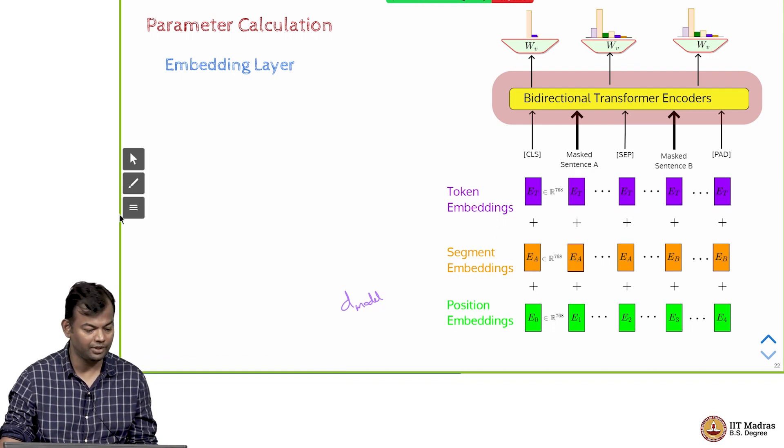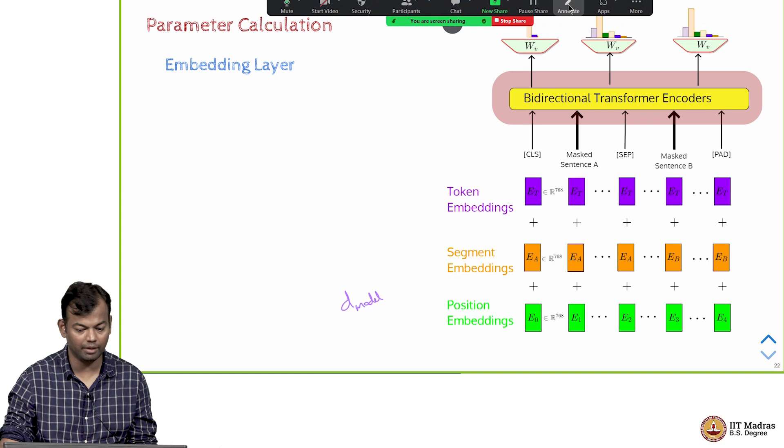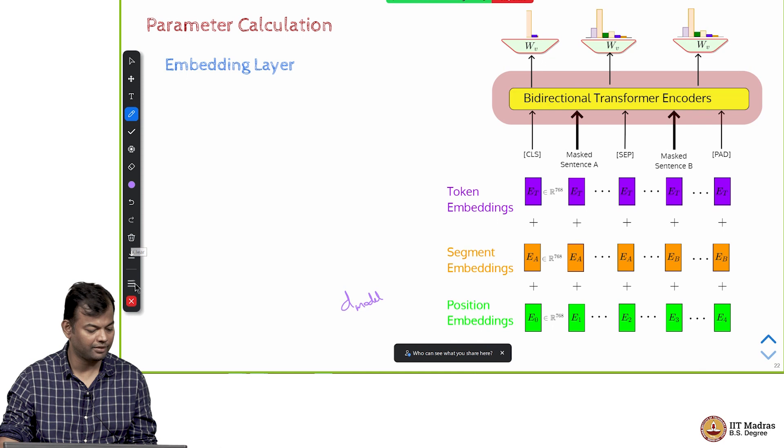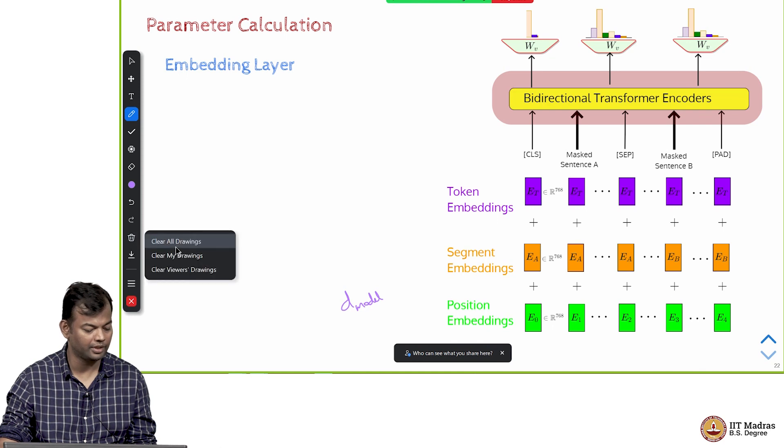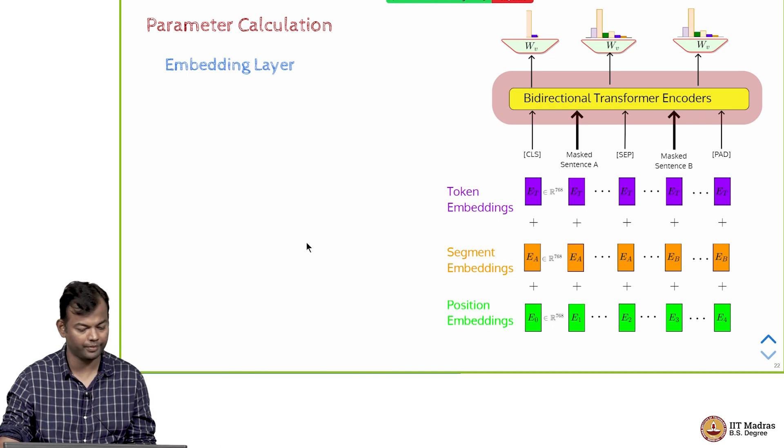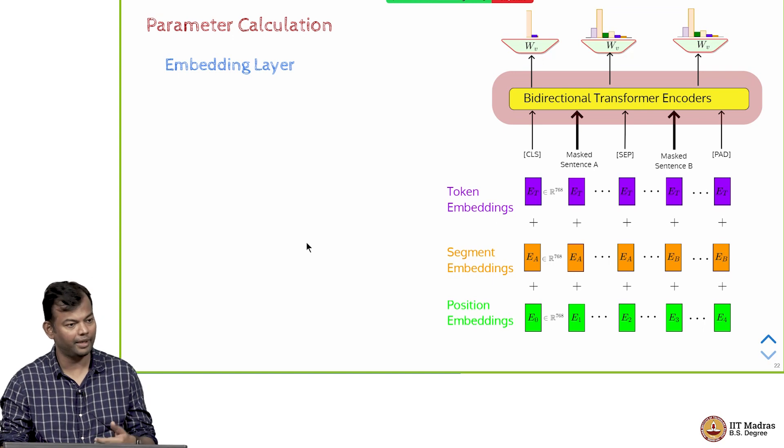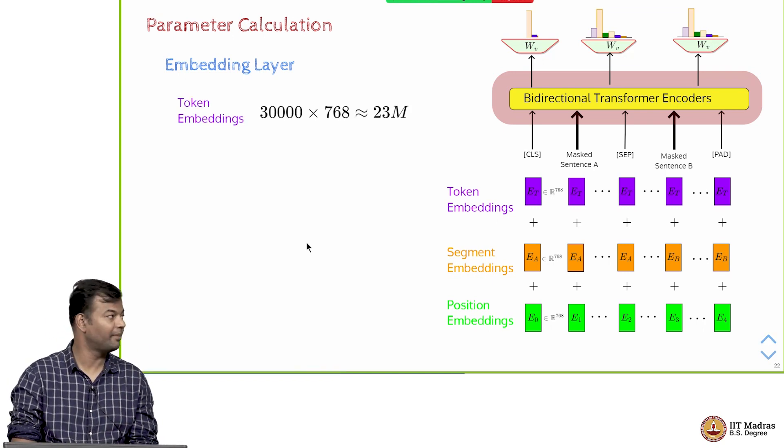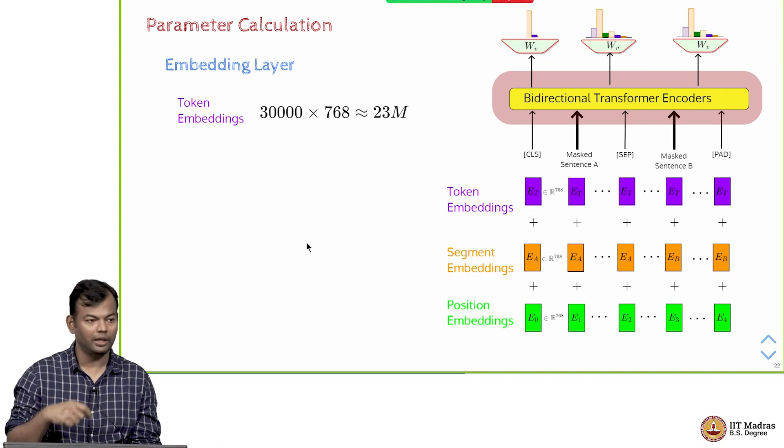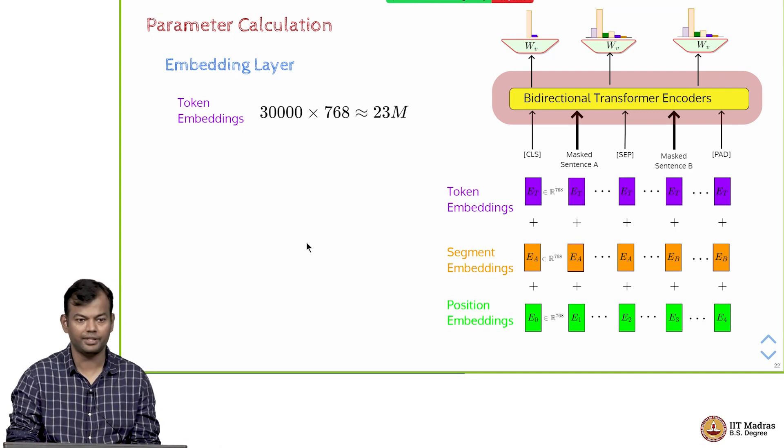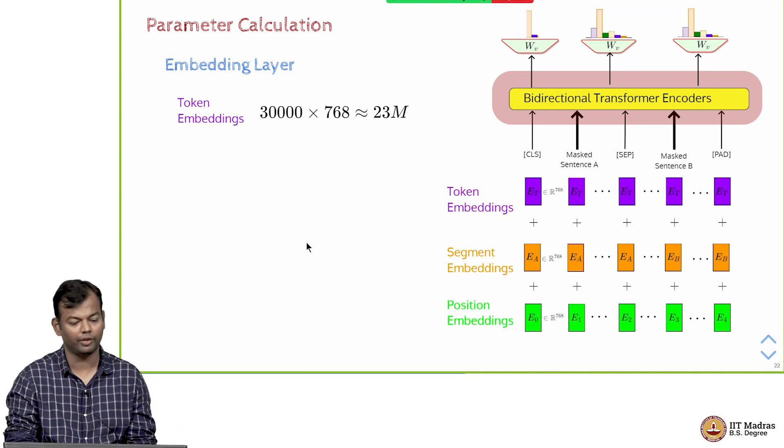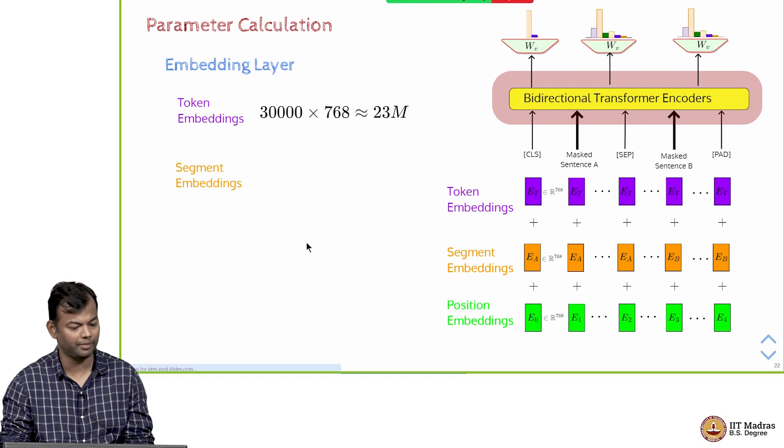Now we will calculate the parameters. While calculating the parameters we will remember that you had the token embeddings, the segment embeddings, and the position embeddings. First the embedding layer has three types of embeddings: the token embeddings, so you have a vocabulary of size 30,000, each word is represented by a 768 dimensional vector. I am just calculating for the base model; you can similarly compute for the large model. This is 23 million parameters.